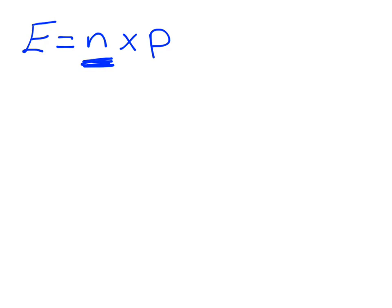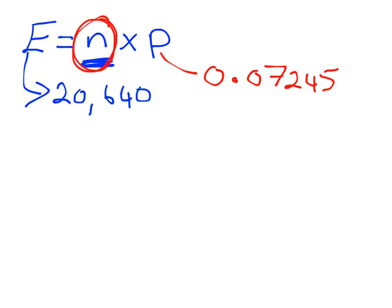I want to know how many apples were there originally. I know the expected number of apples sent for export is 20,640. I've found the probability of an apple being an export apple is 0.07245. Now I want to substitute those into the formula and rearrange to find my original sample size N, how many apples there are in all of the trees.